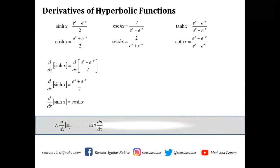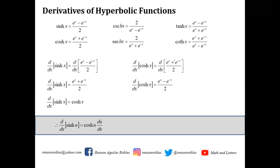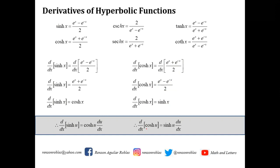In general, the derivative of sinh(u) equals cosh(u) times du/dx. Applying the same procedure, the derivative of cosh(x) equals the derivative of (e^x + e^(-x))/2. Differentiating exponentially gives (e^x - e^(-x))/2, which equals sinh(x). So the derivative of cosh(x) is sinh(x), and in general the derivative of cosh(u) equals sinh(u) times du/dx.